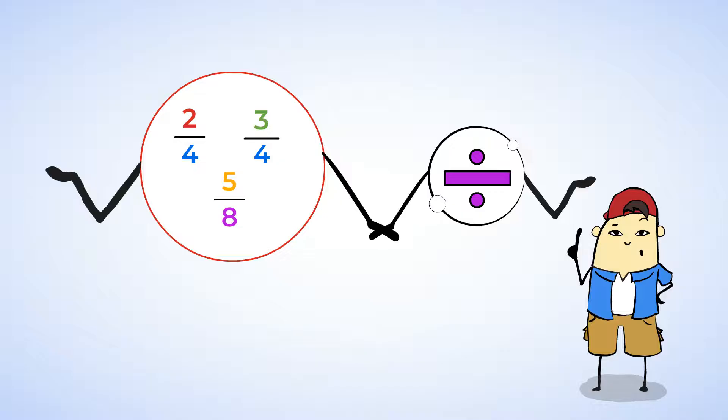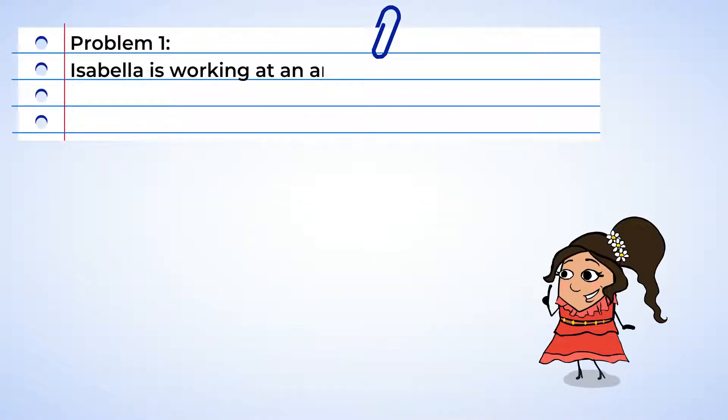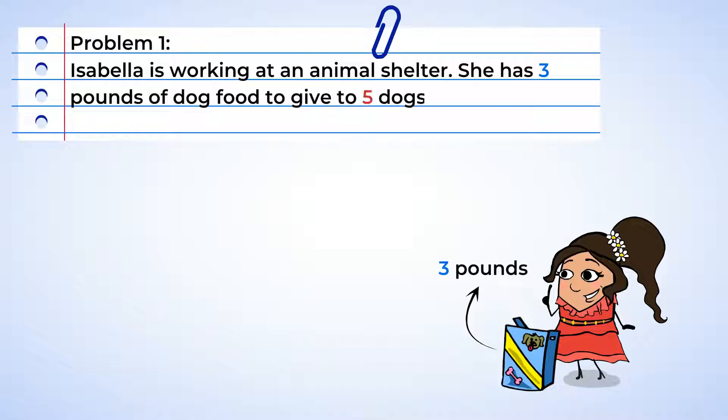To show you what I mean, let's take a look at Isabella and her animal shelter. She has three pounds of dog food to give to five dogs. Well, how much food will each dog get? We can write this as a division problem: three divided by five. But this could also be written as a fraction.